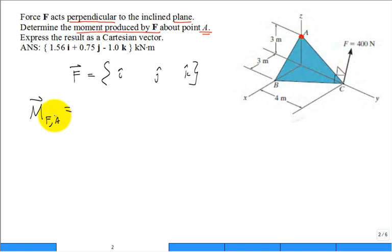The challenge is getting that force as a Cartesian vector. But if you did get that force as a Cartesian vector, wouldn't it just be r cross F? So this would be from A to C.